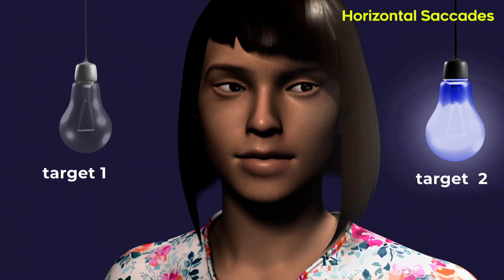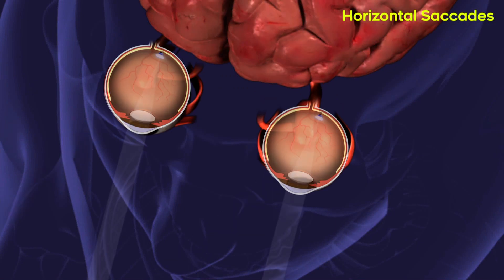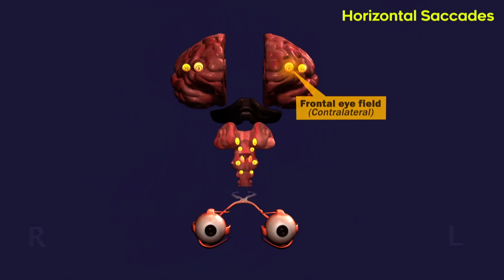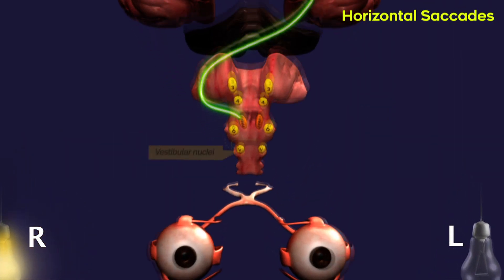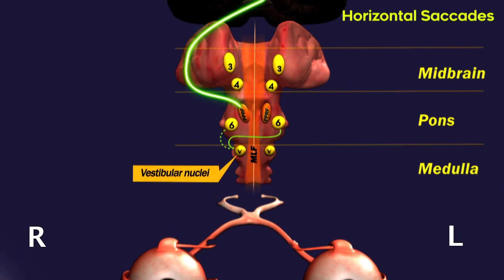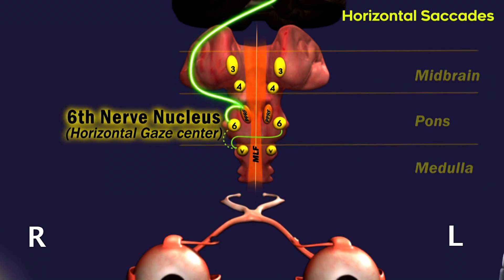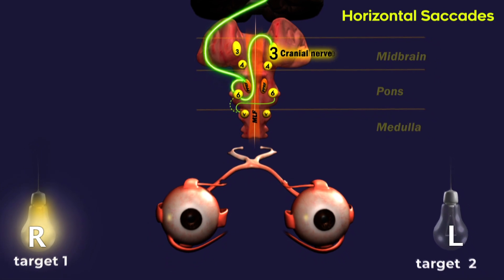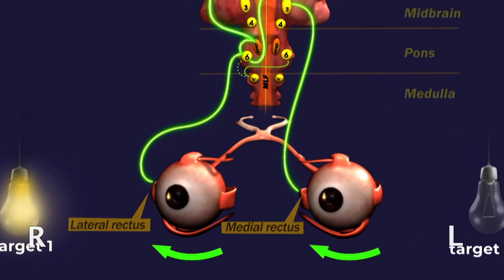Saccades are fast eye movements that bring the object of interest rapidly onto the fovea. For the initiation of a horizontal saccade to the right, supranuclear inputs originate from the left frontal eye field and stimulate the right paramedian pontine reticular formation, which sends excitatory impulses to the right sixth cranial nerve nucleus. From there, impulses travel via the medial longitudinal fasciculus to the left third cranial nerve nucleus, stimulating the right lateral rectus and left medial rectus muscle, producing a saccadic eye movement to the right.